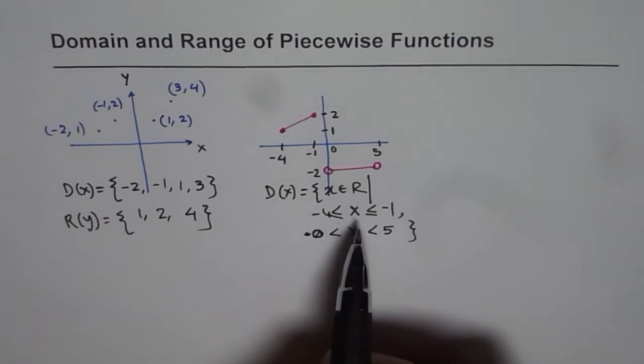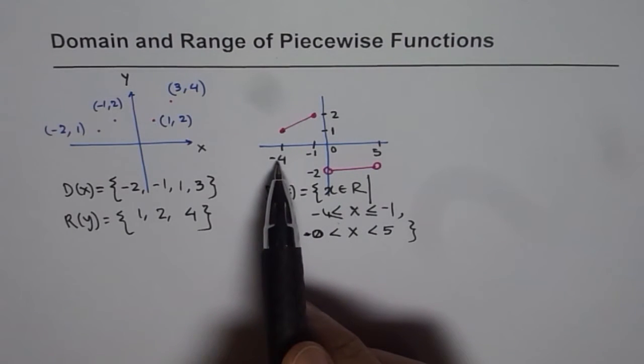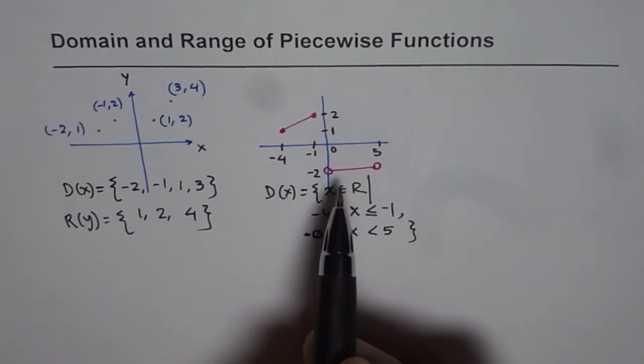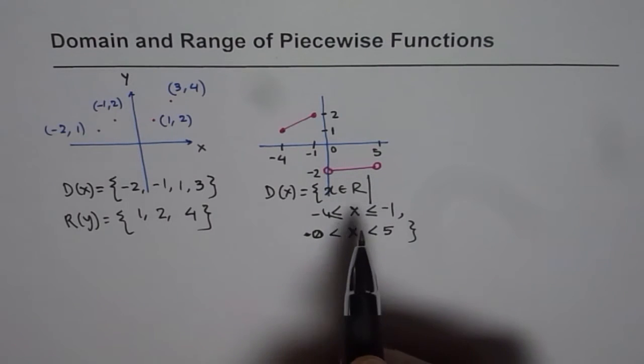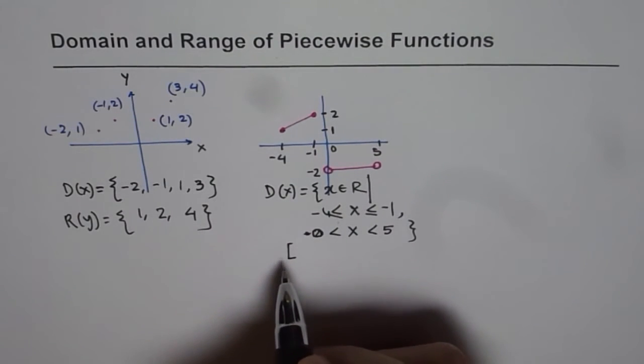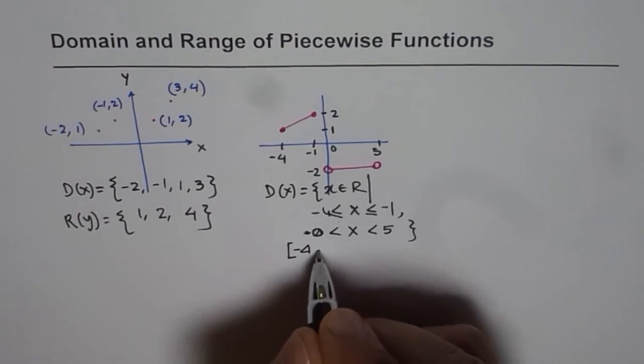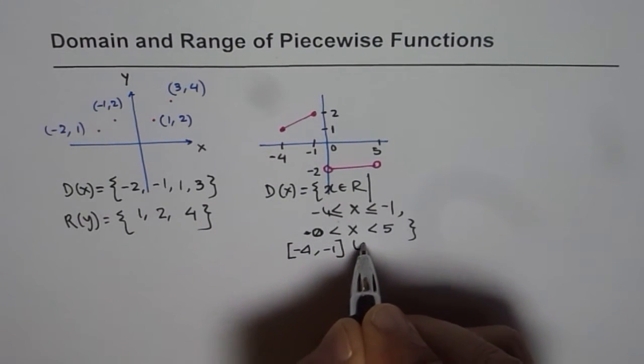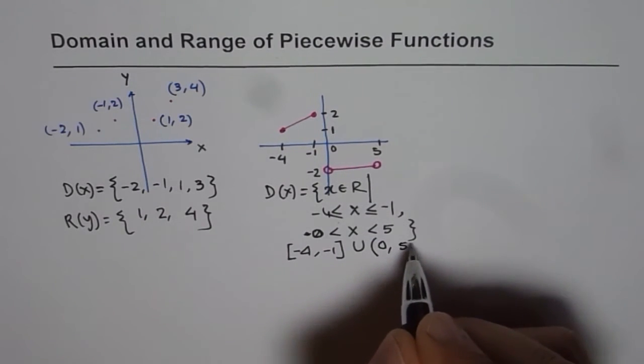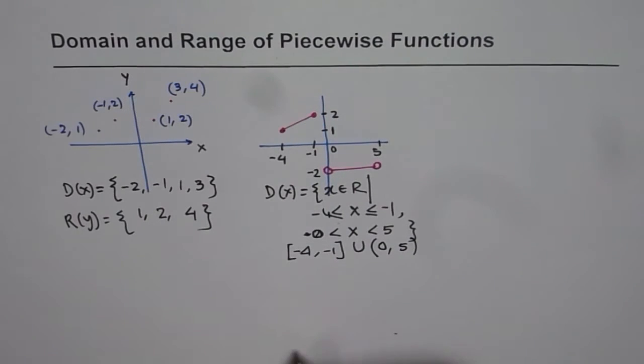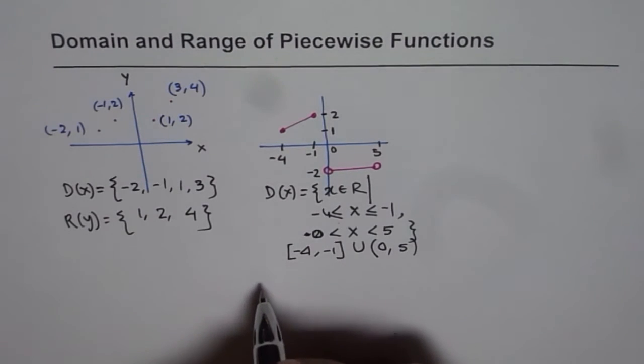So we have included all the values between minus 4 and minus 1, including these two points, and here between 0 and 5, not including 0 and 5. An alternate way of writing this domain could have been like this: square brackets means include, from minus 4 to minus 1, union, and these brackets means do not include, from 0 to 5. That means 0 and 5 are not included but everything in between is included. That's an alternate way of writing the domain.